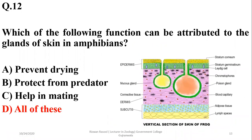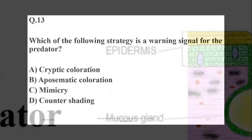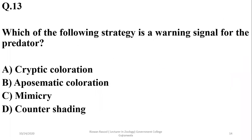It's a cross section from the amphibian skin showing different glands and different pigments in the skin. Which of the following strategies is a warning signal for the predator?